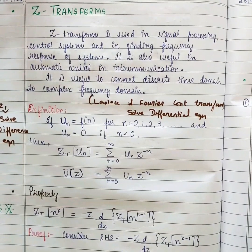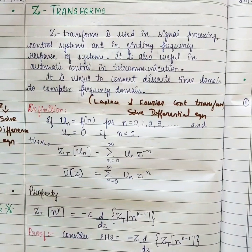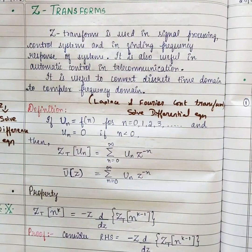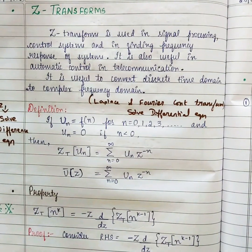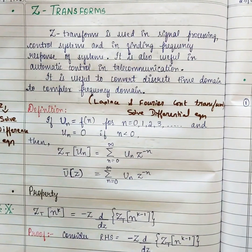Hi, so far we have seen problems in Fourier transform. Now we are going to study about Z transform. Basically, what is the difference between Laplace, Fourier, and Z?